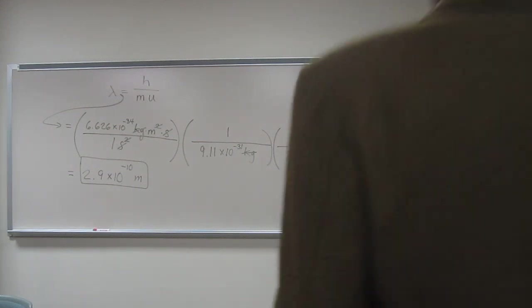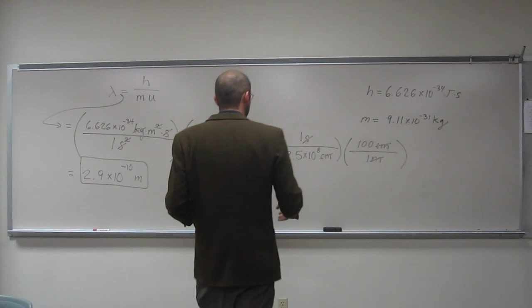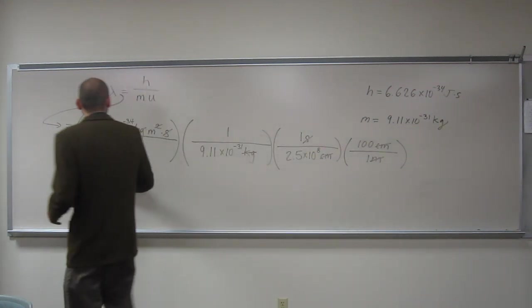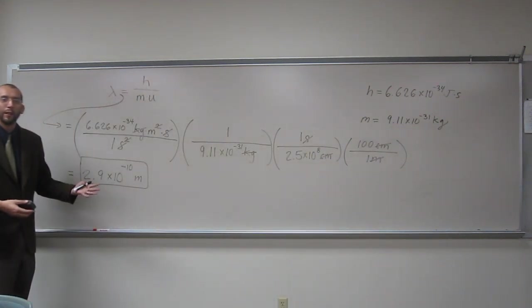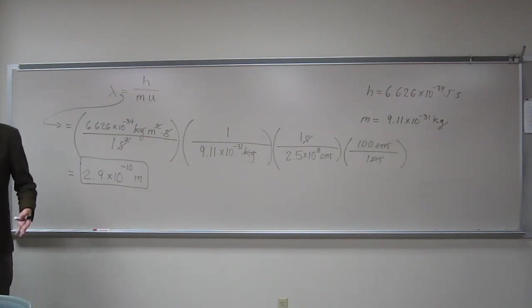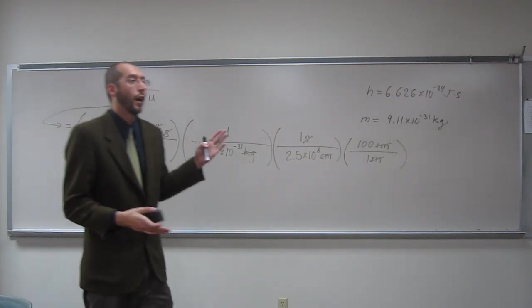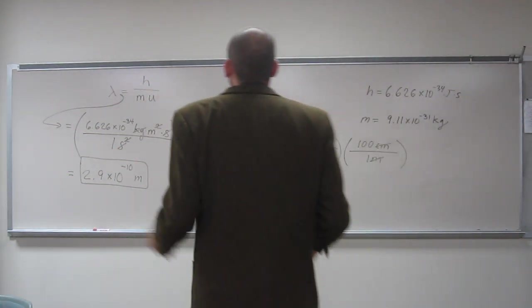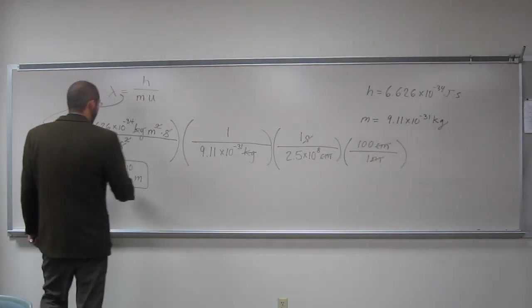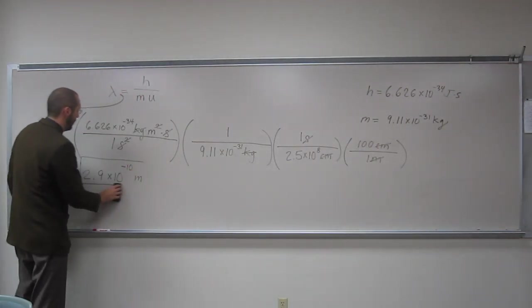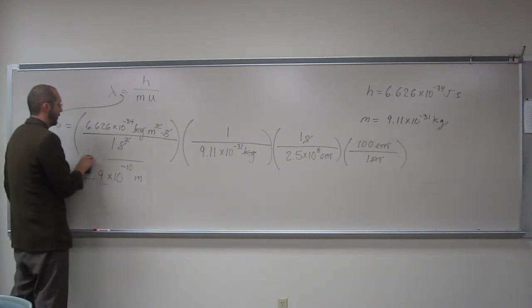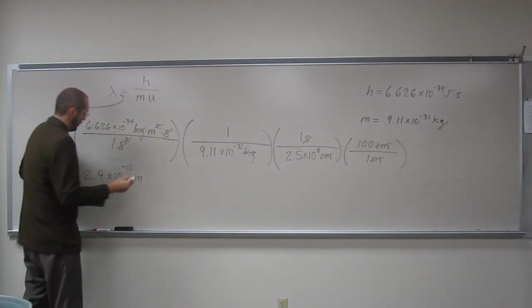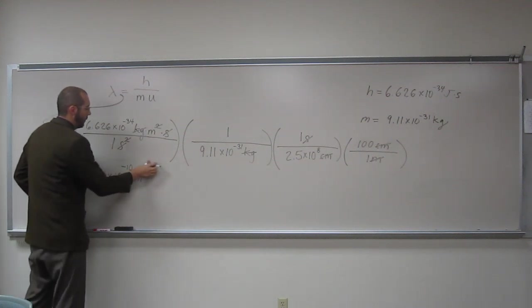So let's just convert this to nanometers, because 10 to the negative 10th, let's convert it to something that kind of is along the lines of what we know. Remember, visible light is from like 400 to 800 nanometers, right? So let's convert it to nanometers, okay? Because everybody's like 10 to the negative 10th, but let's just convert it to nanometers just for fun.